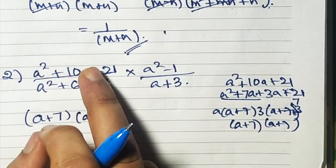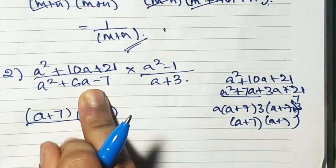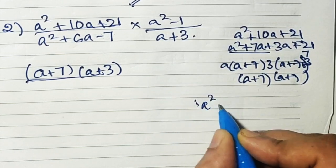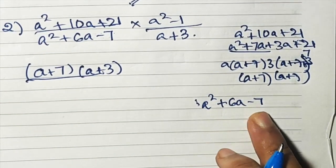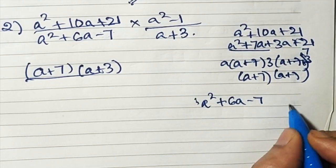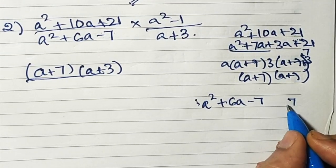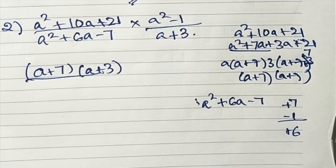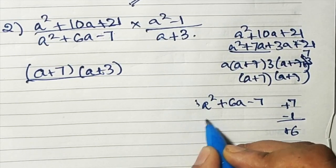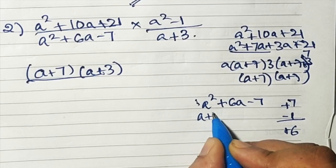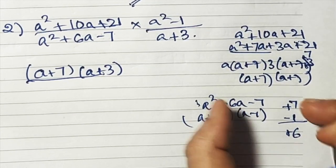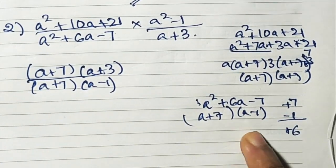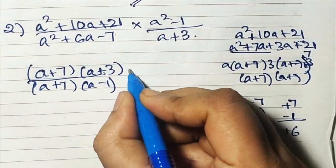Now for the denominator a² + 6a - 7, break 7 to get 6: factors 7 and 1. Putting +7 and -1 gives +6. So it factors as (a + 7)(a - 1).